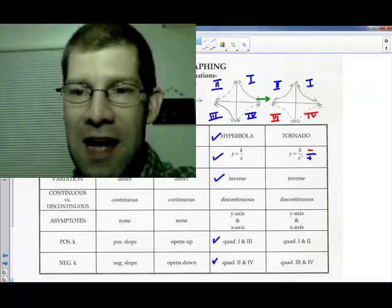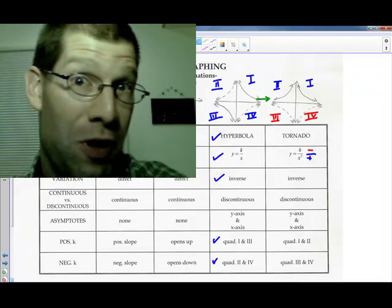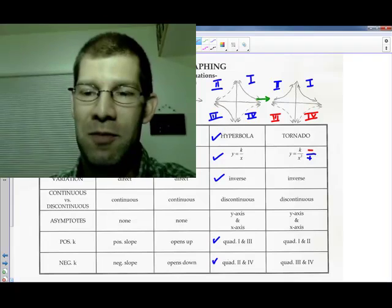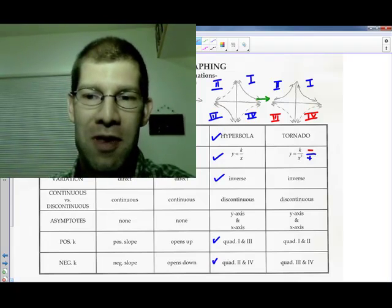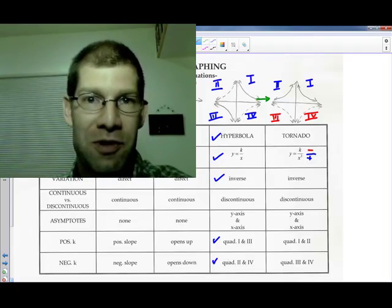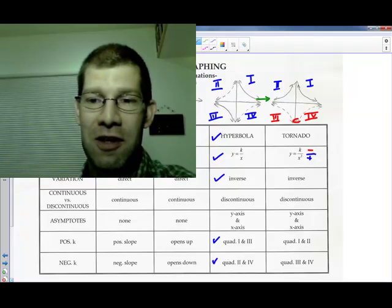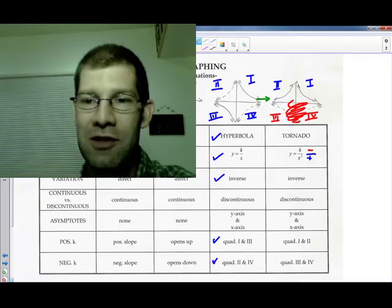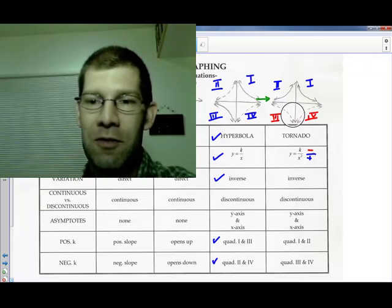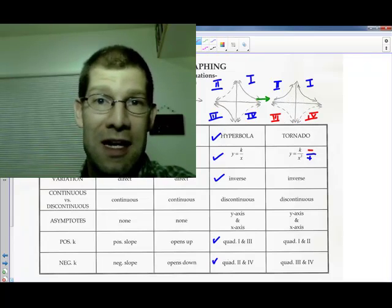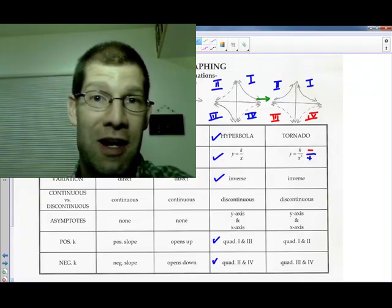One way to possibly remember the difference, and I don't know if this is where the name tornado came from and the person that taught me, but you can remember that the downward, the dashed ones in the graph, they kind of look like a funnel cloud, like a tornado. They're kind of skinnier at the bottom, getting increasingly large. So that's one way perhaps you remember that a negative k gets you down below if you don't want to try to reason through it.